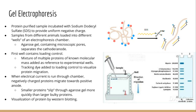In addition to each sample being loaded into a well, a very important loading control is added in the first well. The loading control contains a mixture of proteins of known molecular mass that can be used as a reference for size. The loading control also contains a tracking dye that allows all the proteins in the loading control lane to be visualized once they're separated. This protein dye is not usually added to the experimental wells, because if you did you would just get a big smear across the gel.